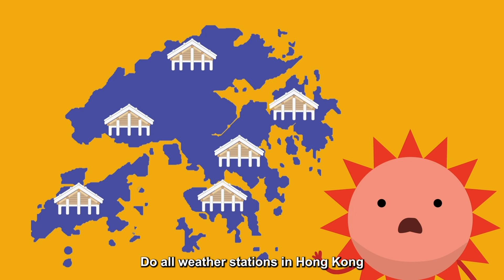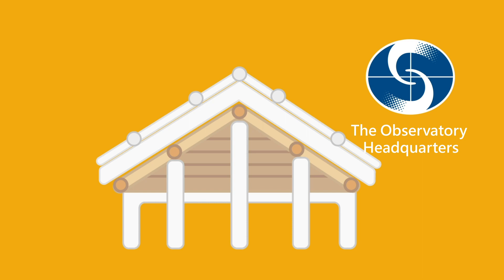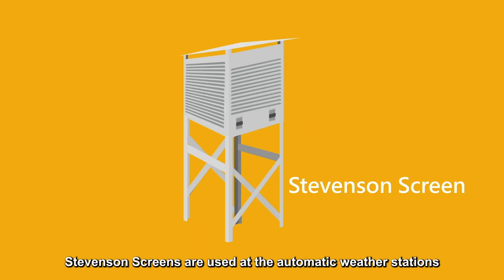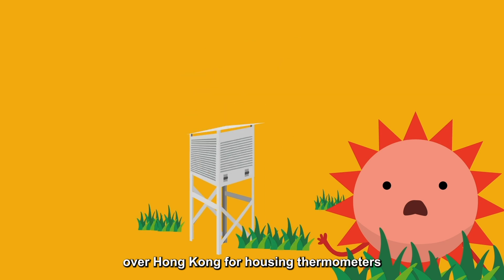Do all weather stations in Hong Kong have a thermometer shed? No, because of its bulky size. It's only set up at the observatory headquarters. Stevenson screens are used at the automatic weather stations over Hong Kong for housing thermometers. Can we do measurements by simply placing the Stevenson screens anywhere outdoors?